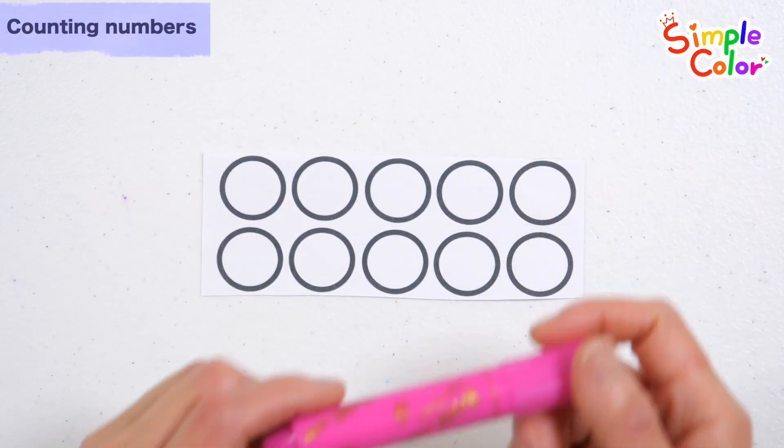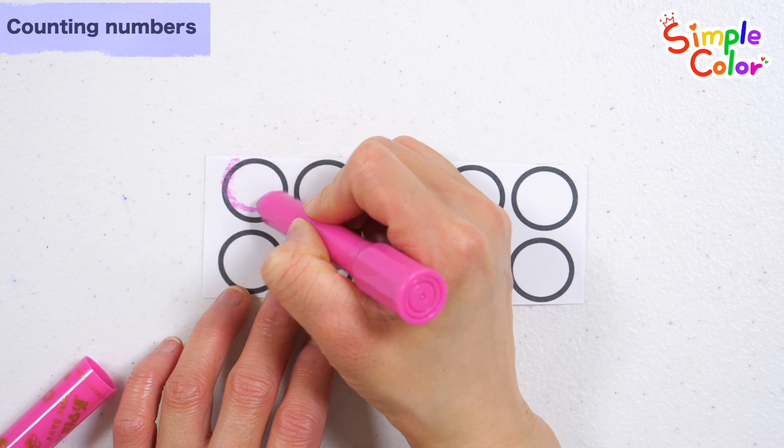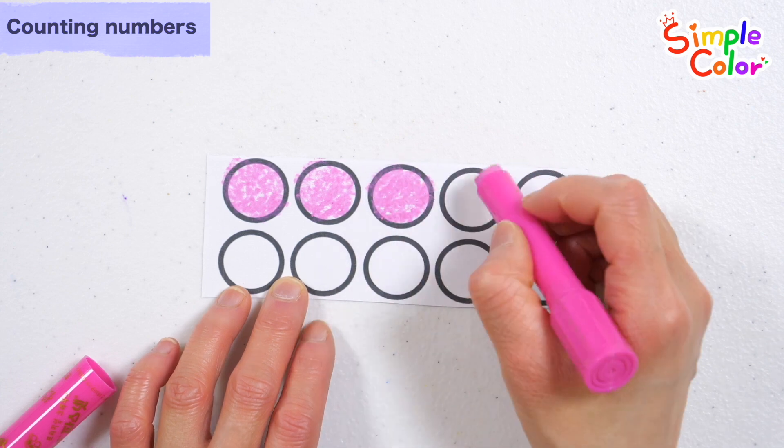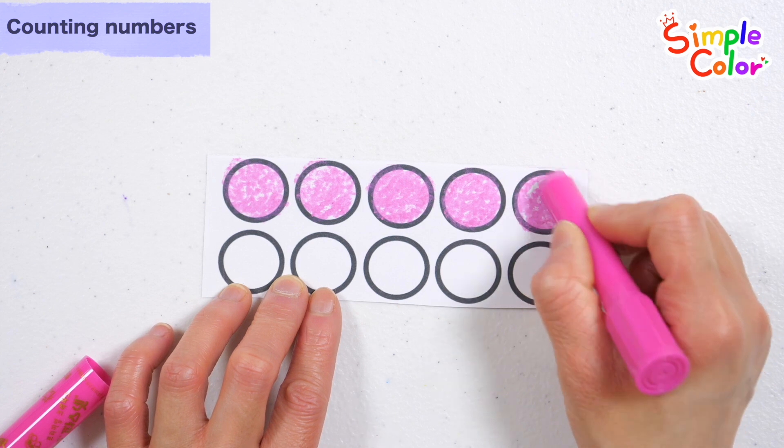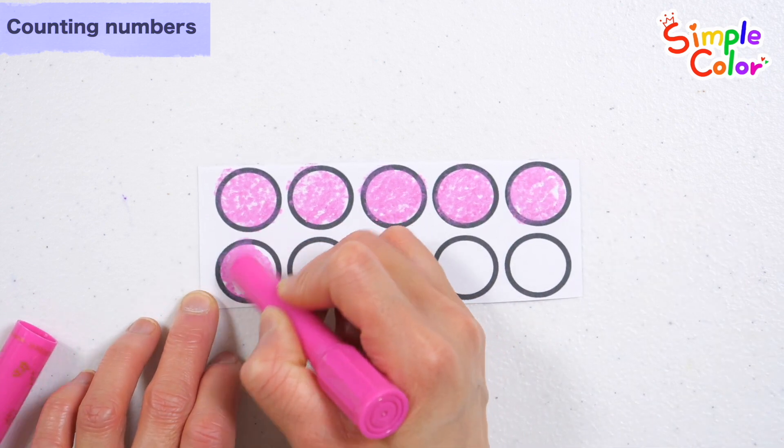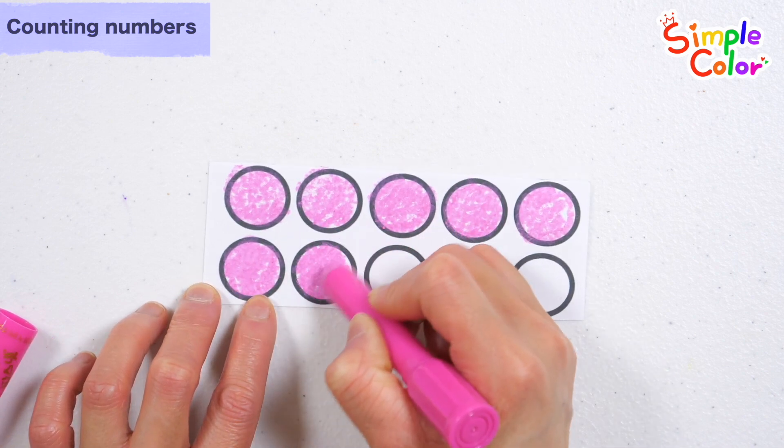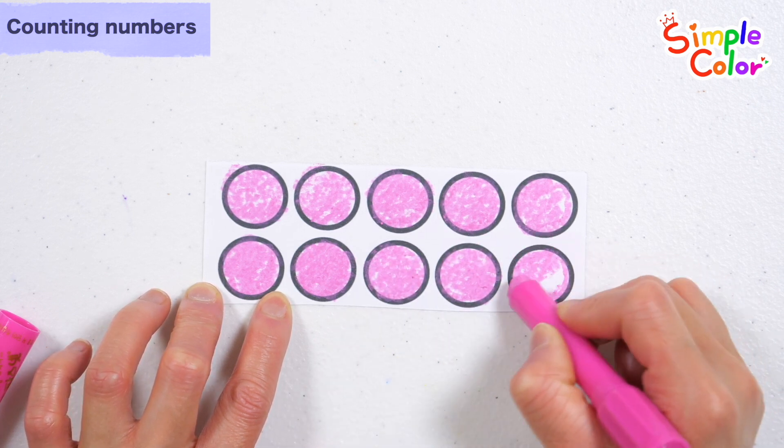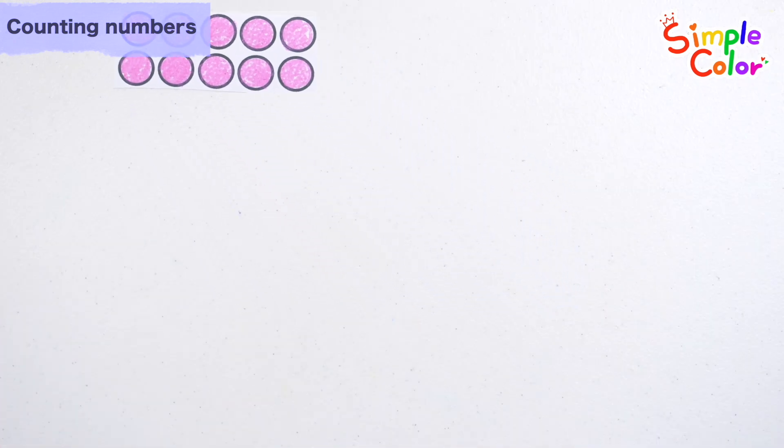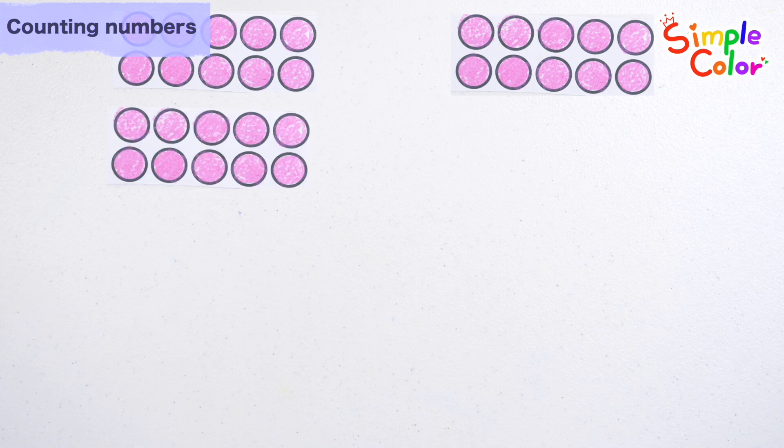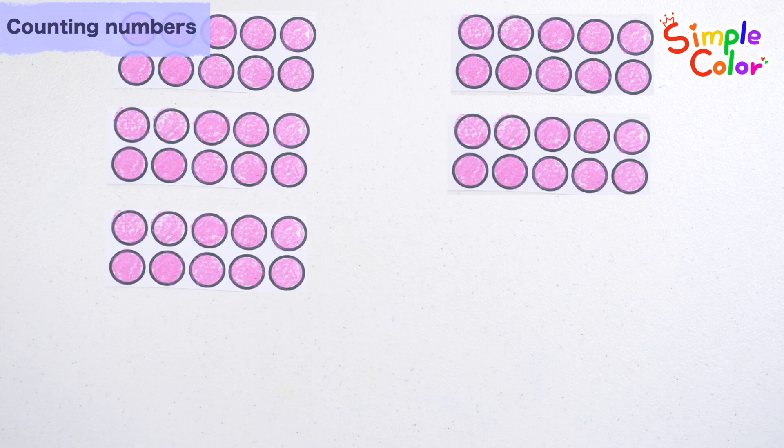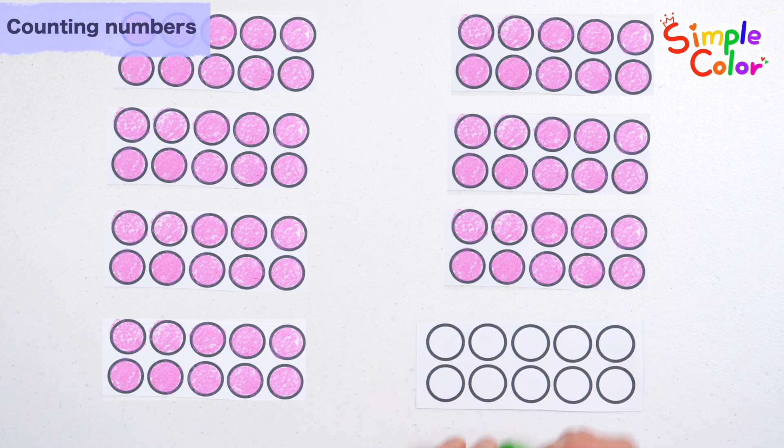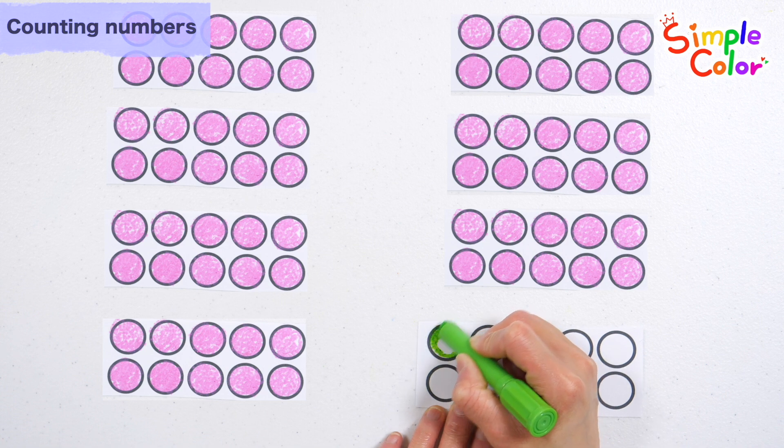Learn how to count by coloring circles. 1, 2, 3, 4, 5, 6, 7, 8, 9, 10, 10, 20, 30, 40, 50, 60, 70, 71.